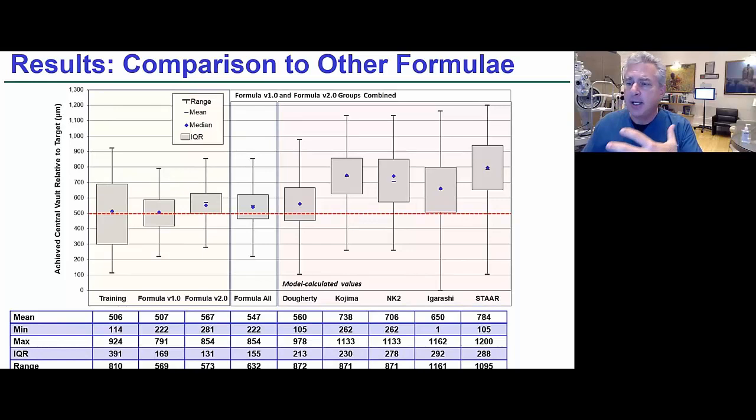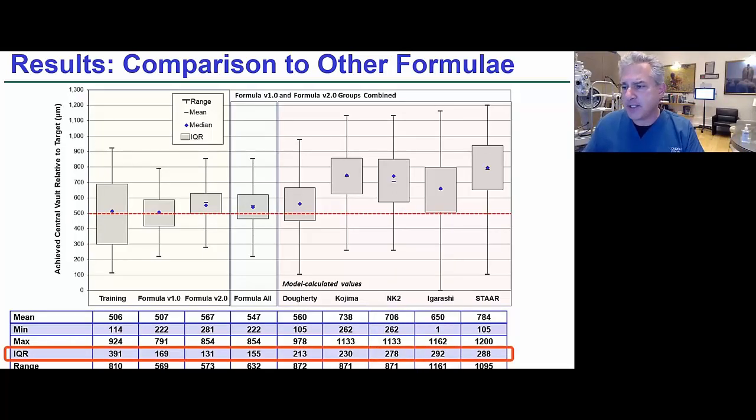I think everybody knows this by intuition. The STAAR formula tends to be a little bit high, and a lot of people subtract one size, usually often from what they see on the Ocos website. The Iragashi, the NK2, just a little bit higher than the ultrasound Kojima formula that we got. This is just an overall picture. Let's look at the interquartile ranges because that's a measure of dispersion. You can see that the dispersion that we have, even combining formula 1 and formula 2, is exceedingly low, and it's way lower than anything we had before.